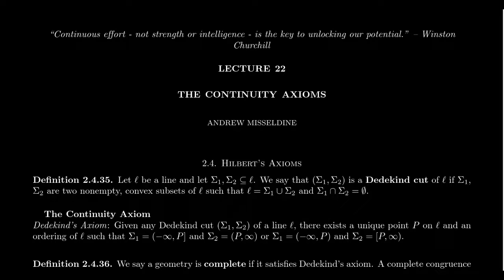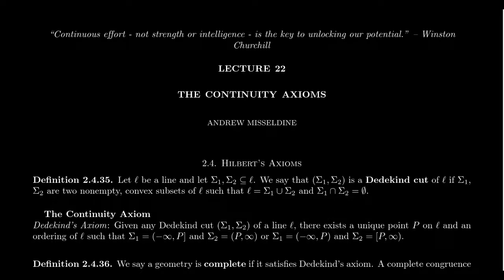The last family of axioms from Hilbert's axioms of planar geometry are, in fact, the continuity axioms. This is the final piece which completes our notion of Euclidean geometry: incidence, betweenness, congruence, the Euclidean parallel postulate, and then continuity. The continuity axiom is sometimes called the completeness axiom, so we can use those terms interchangeably.